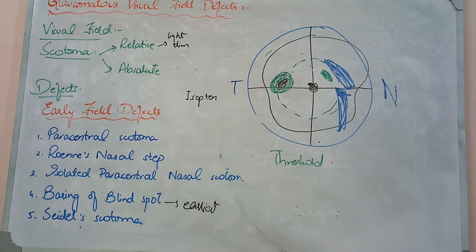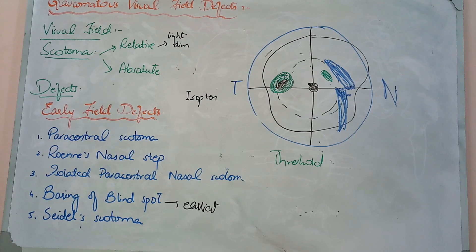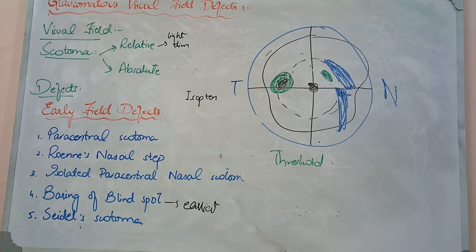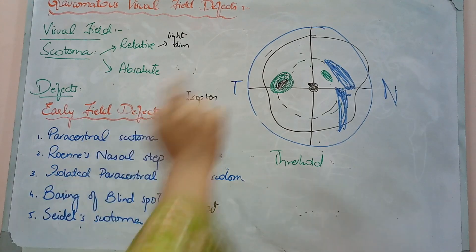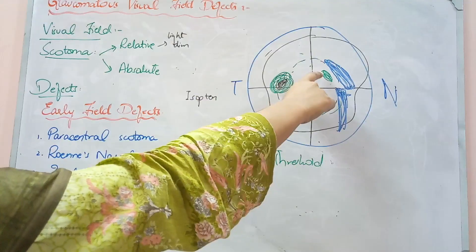After that, we have Seidel scotoma. This is your early visual field effect. In Seidel scotoma, it is simply that you have a paracentral scotoma which will be a little further from your blind spot — it extends from the blind spot.